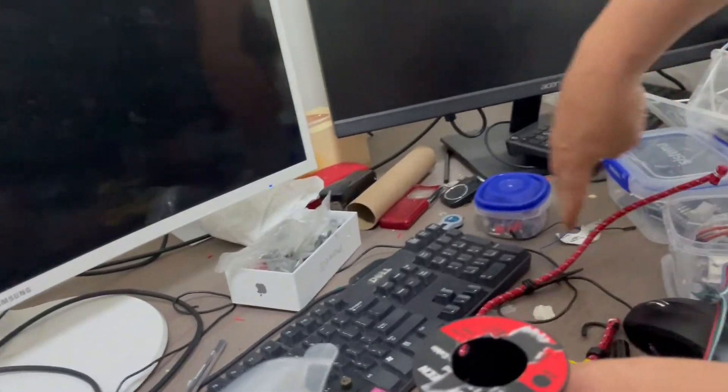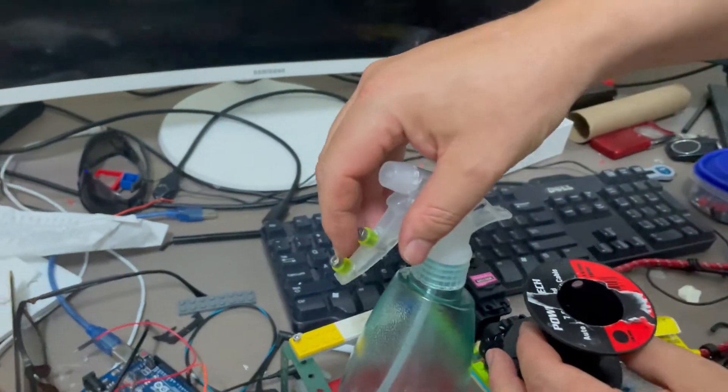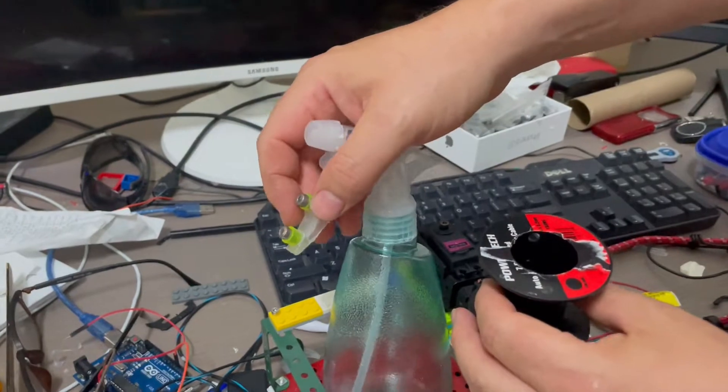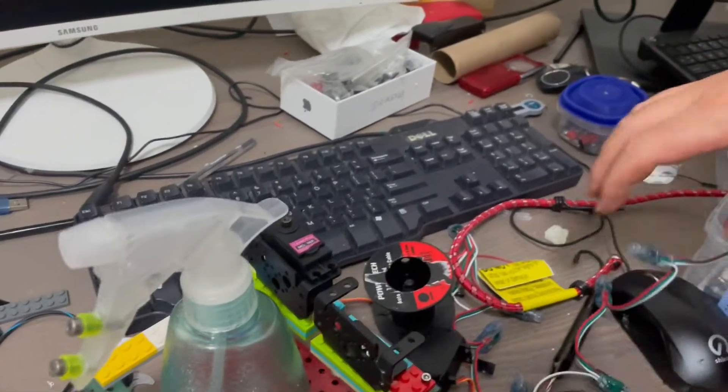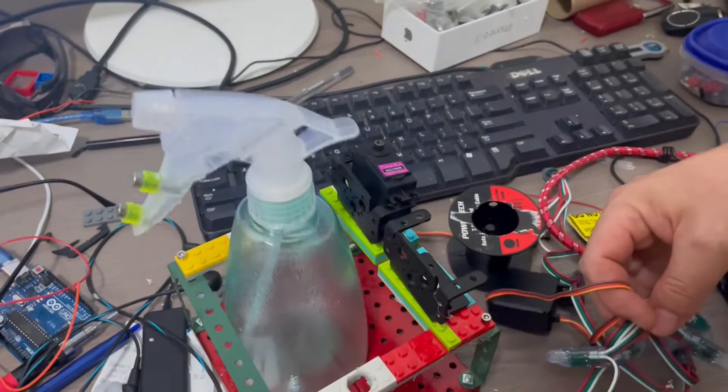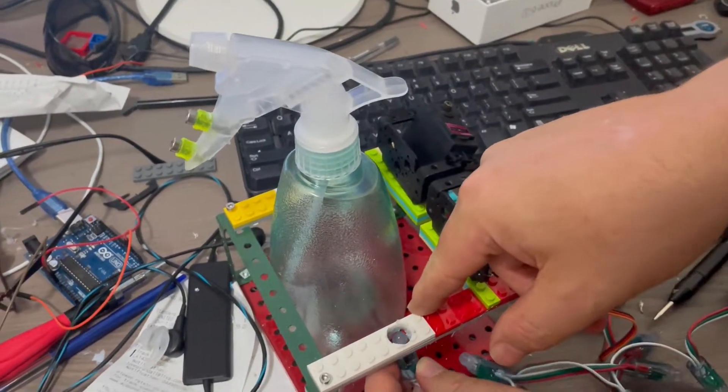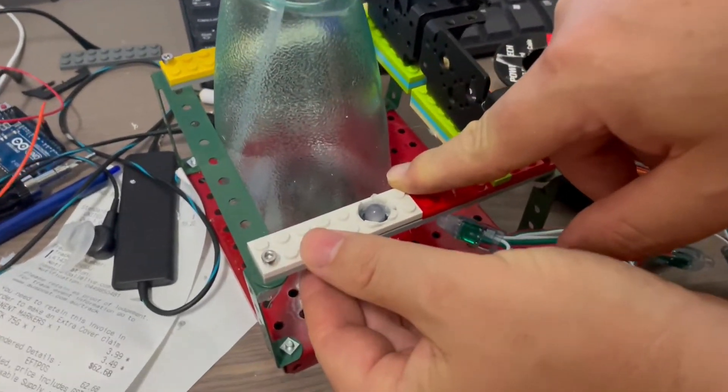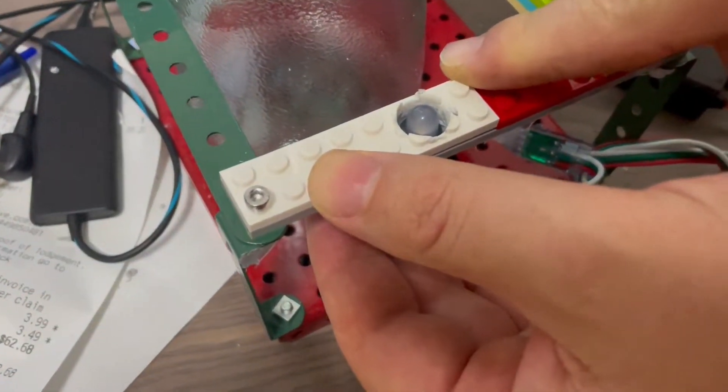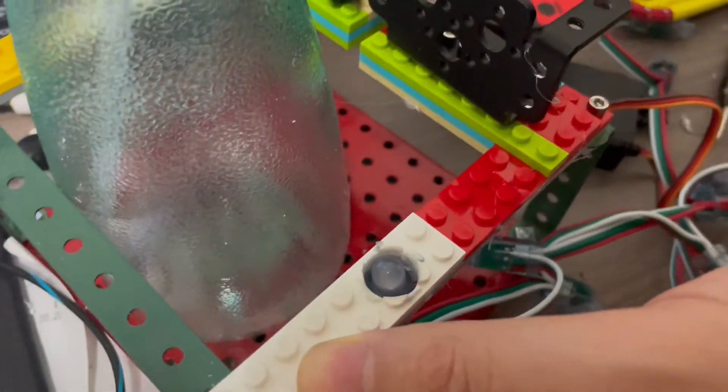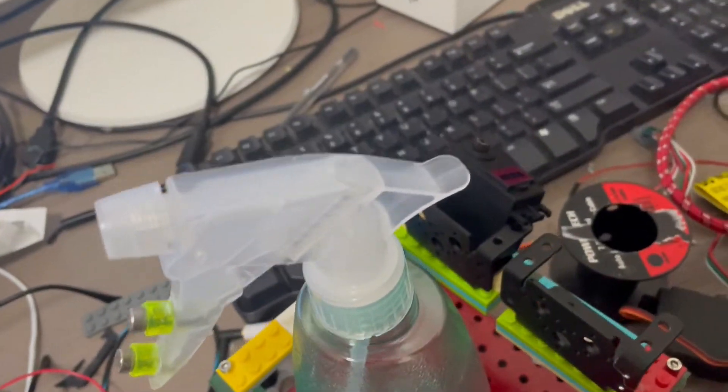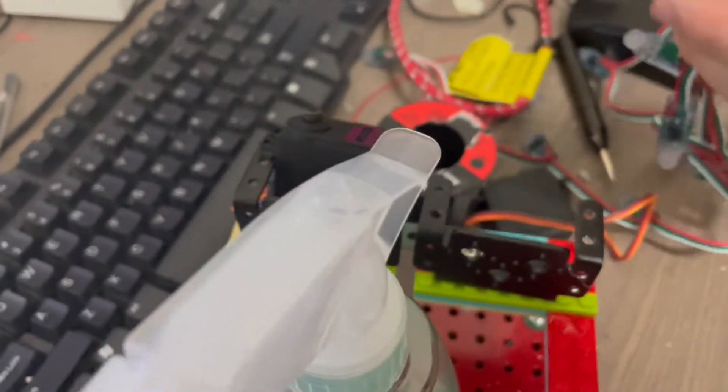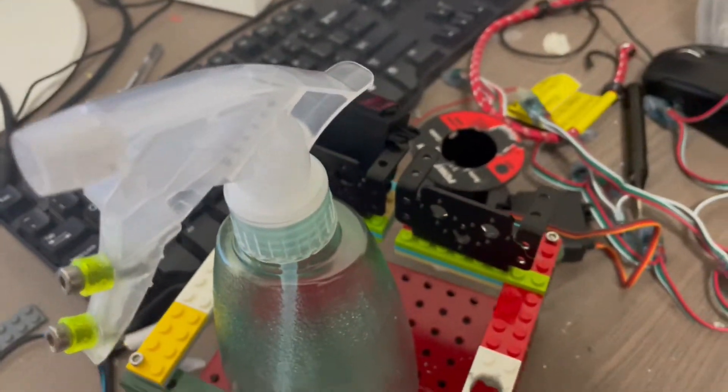And then the bungee cord will go around here. And I've put these here on the trigger of the water bottle just to stop the bungee cord from slipping up and down. And the other thing I've done is I've drilled these little holes here so I can just stick up some LEDs inside there which will be good for the lights. So I'll wire all that up and hopefully we'll have it working in the next video.